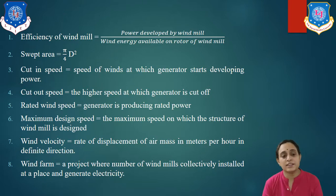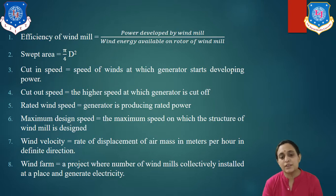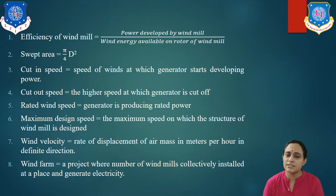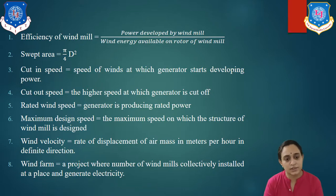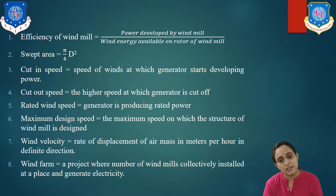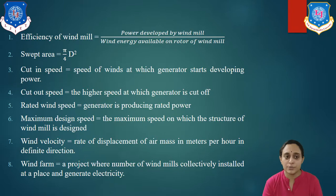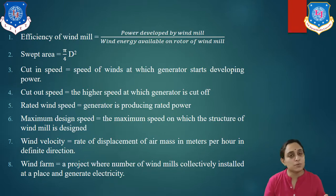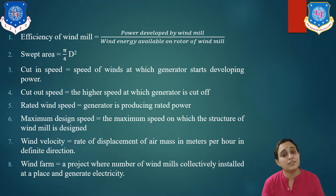Wind velocity is a vector quantity defined as the rate of displacement of air mass. It is generally expressed in meters per second or kilometers per hour. Wind velocity is always given with its direction, hence it is a vector property. Wind farm is the location where each and every windmill is placed in order to generate electricity.